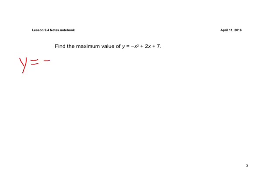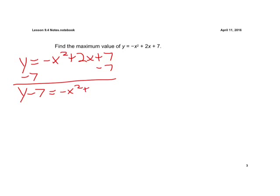So if we rewrite our equation, again we're going to write this in vertex form. So our first step is, let's go ahead and move our 7 to the other side. Subtract it from both sides. We have y minus 7 equals negative x squared plus 2x.